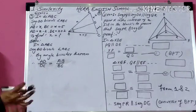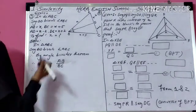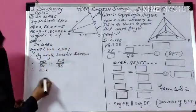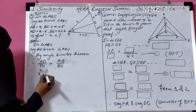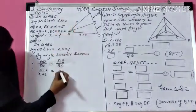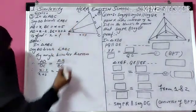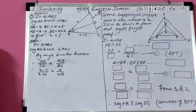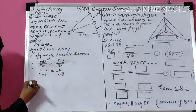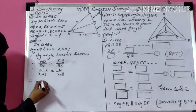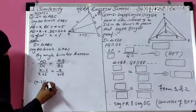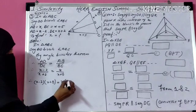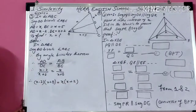Next step: substitute the values. AD is X minus 2, DC is X plus 2, AB is X, and DC is X plus 5. Now cross-multiply: X minus 2 times X plus 5 equals X multiplied by X plus 2.